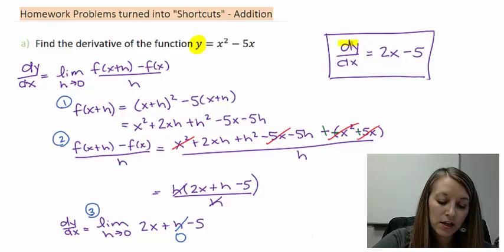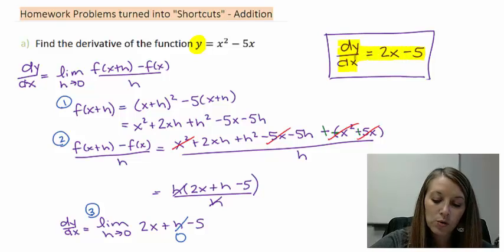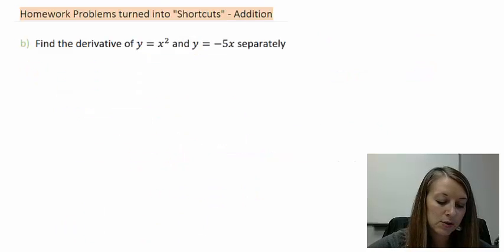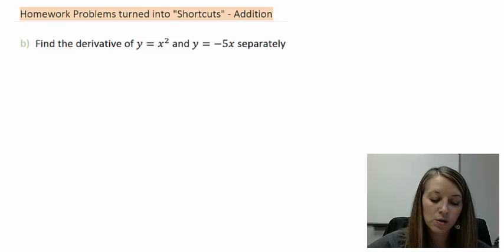So our derivative, or our dy dx, is equal to 2x minus 5. Now we're going to keep that in mind because we're going to figure out how that partners up with the derivatives that we find here of y equals x squared and y equals negative 5x.